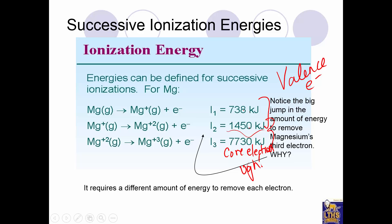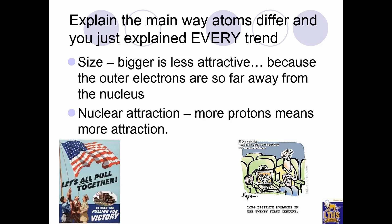So here's what I want you to be able to do: explain the main way atoms differ, and you can explain every trend. Atoms get bigger going down and smaller going across. A big atom is less attractive because its nucleus is far from its outer electrons. More protons means more nuclear attraction, but a small atom with many protons outperforms a big atom with many protons. Long distances mean less attraction.